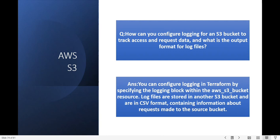How can you configure logging for an S3 bucket to track access and request data and what is the output format for log files? You can configure logging in Terraform by specifying the logging block within the aws_s3_bucket resource. Log files are stored in another S3 bucket and those files are in CSV format containing information about the requests made to the source bucket.